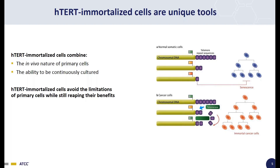Many investigators are interested in performing long-term studies which model the physiological conditions occurring in the human body. To address this need, we stably transfected our normal primary cells with an overexpressing vector for hTERT, thus creating the ATCC hTERT immortalized primary cell lines.